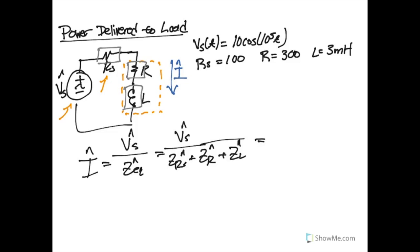With these values we can start to plug in a couple things. If we transform our source into its polar form that would be 10e to the j zero. Our phase here, because it's not specified in the problem, is just going to be zero. Now the impedance of the source resistor is just going to be its value, so that's going to be 100, and the impedance of the load resistor is going to be 300.